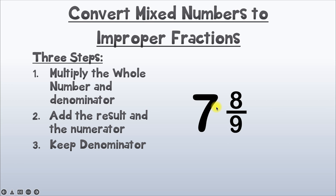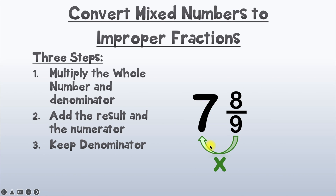Here's example number 3. We've got 7 and 8 over 9, and we want to convert this mixed number into an improper fraction. Following our three steps, step 1 is to multiply the whole number and the denominator. Our denominator is 9 and our whole number is 7, so we'll multiply 9 times 7, which gives us 63.